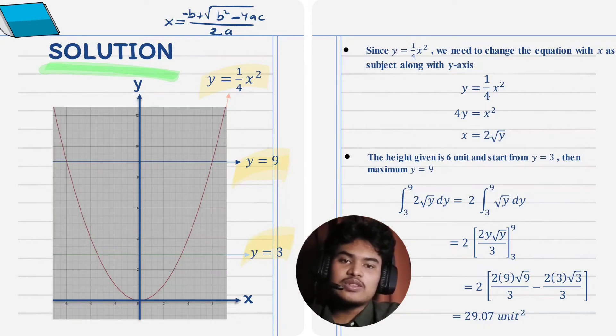From the equation, we know the lower point of the graph is y equal to 3, and the height of the flower pot is 6. Then, we can conclude that the upper point of the graph is y equal to 9, because 3 plus 6 is 9. Then, we can use the formula of area of integration under the graph. The integration of 2 square root of y dy from 3 to 9 is equal to 29.07 unit squared.